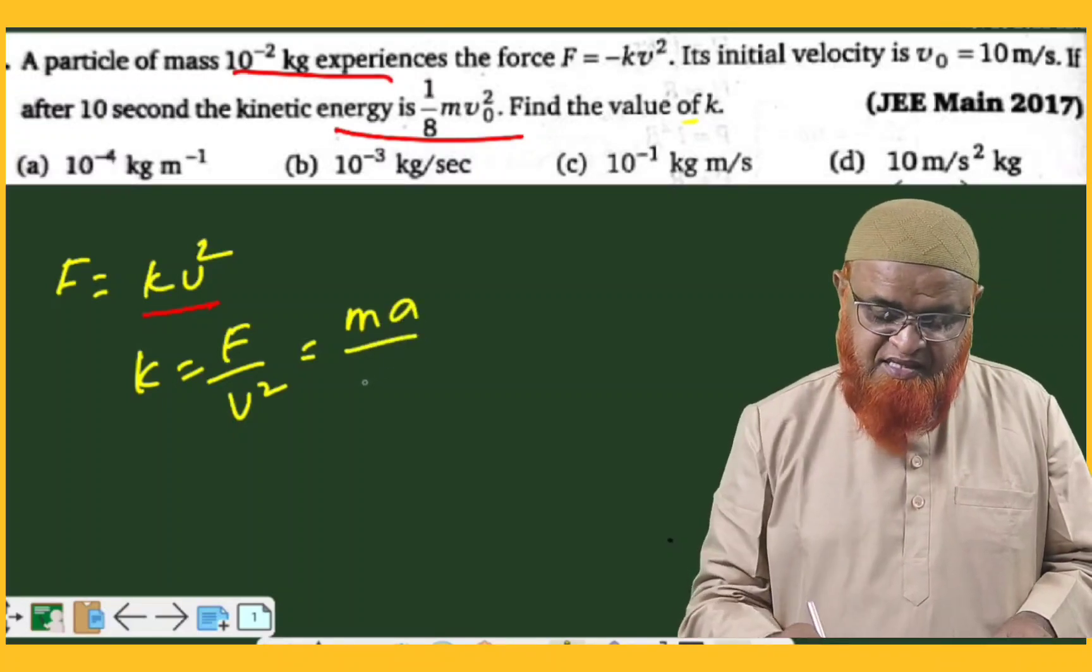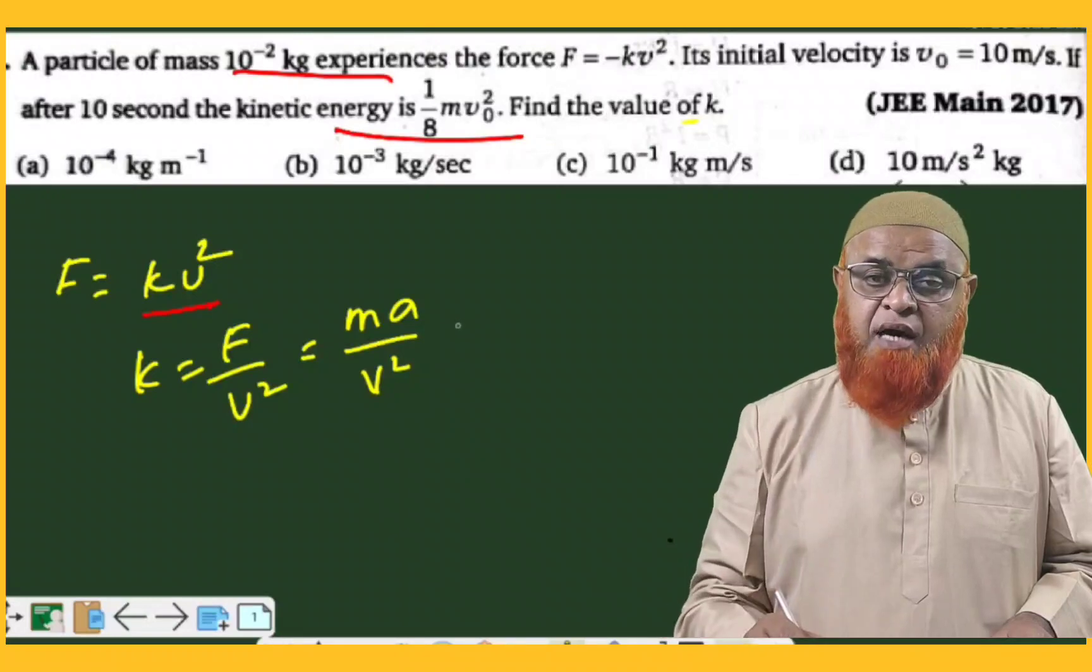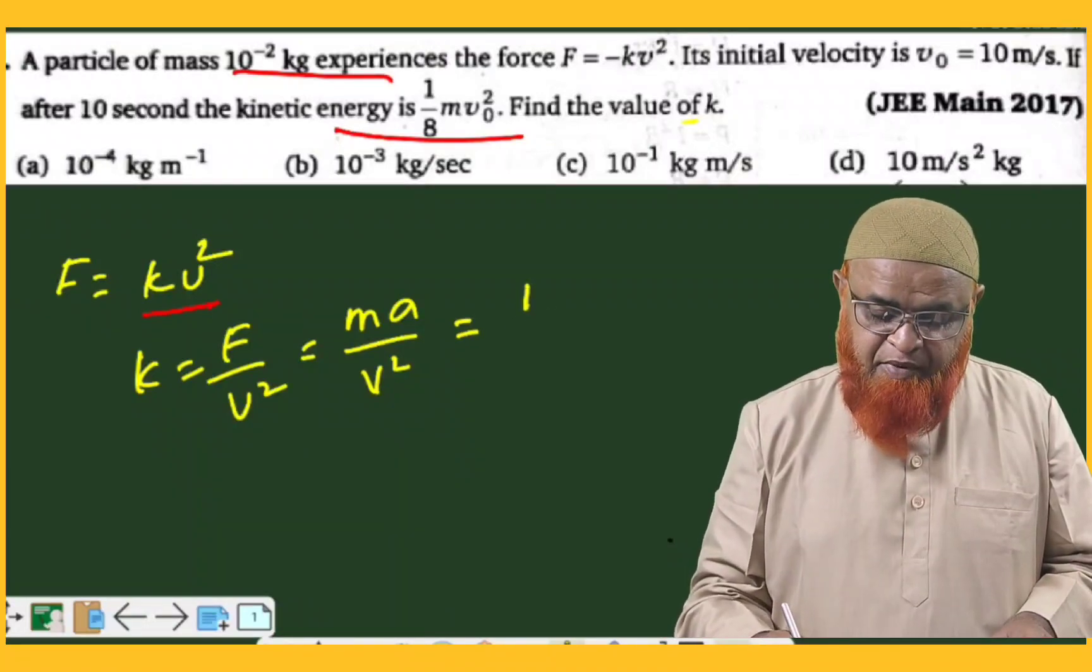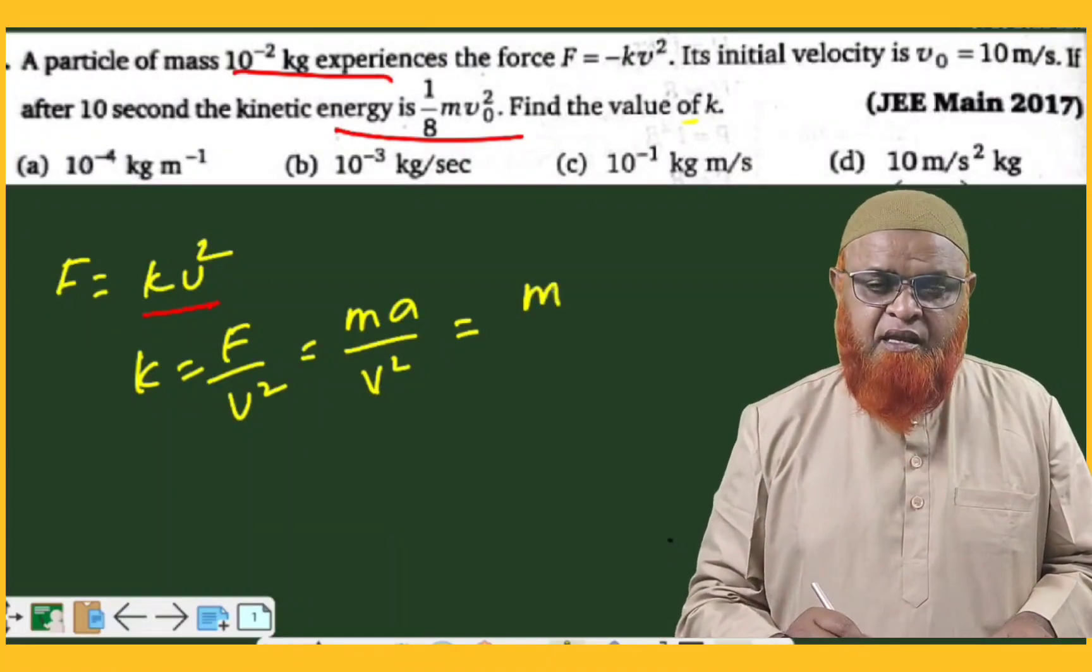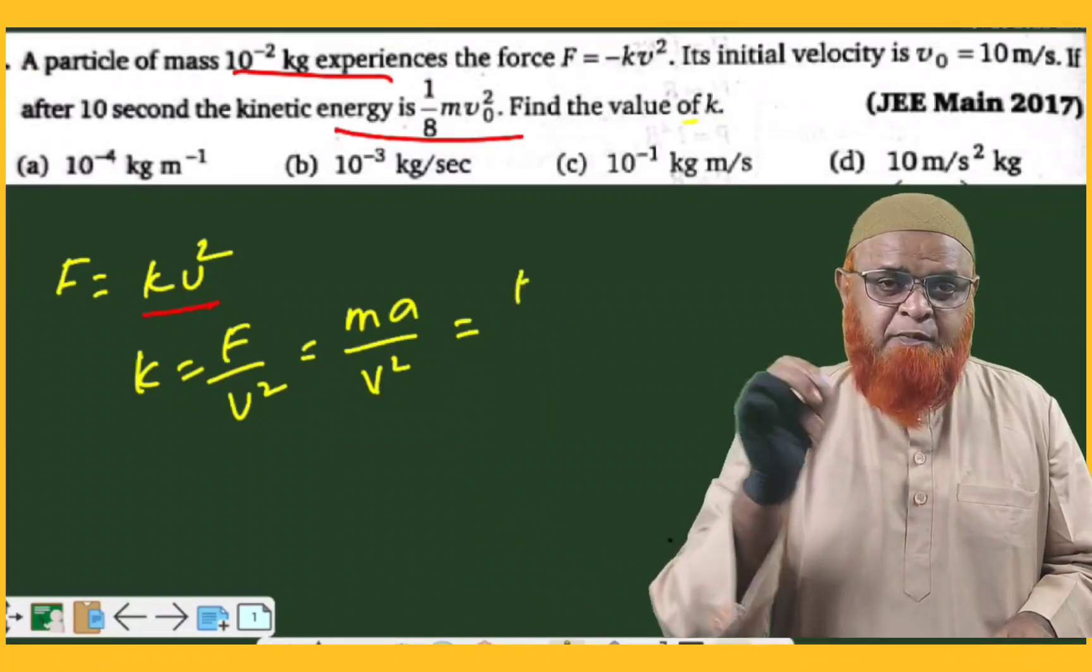The units of mass is kg. Whereas the units of acceleration is meter per second square, divided by units of velocity which is meter per second.